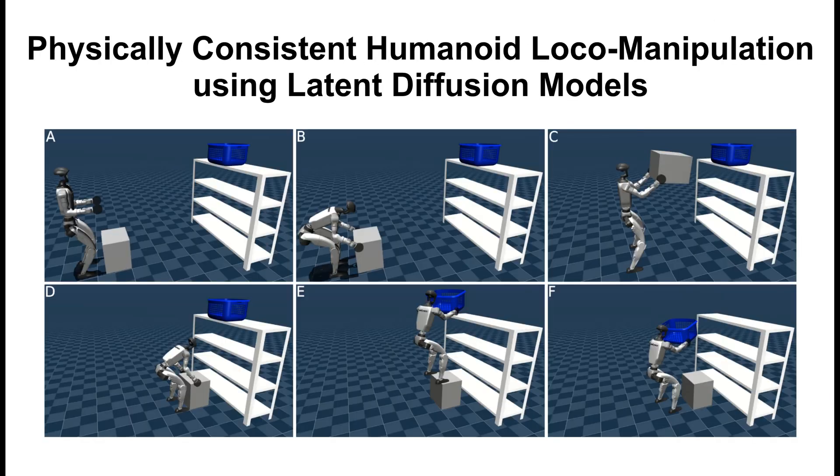In conclusion, we proposed a pipeline that plans contacts and robot configurations that is able to guide a trajectory optimization problem to generate physically plausible trajectories for humanoid loco-manipulation.